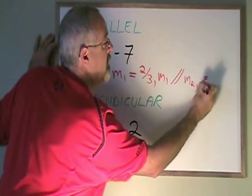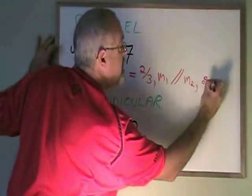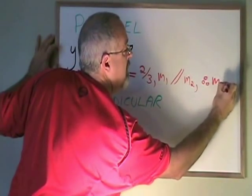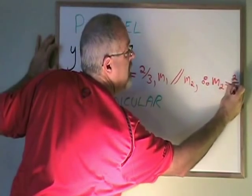Therefore, the slope of line 2, m2, will also be equal to 2 thirds.